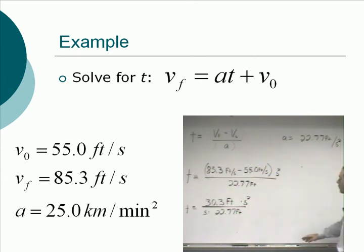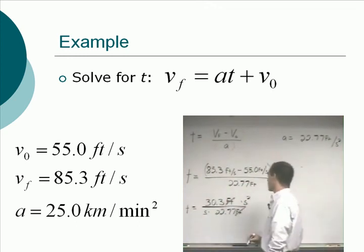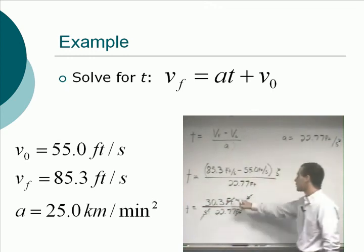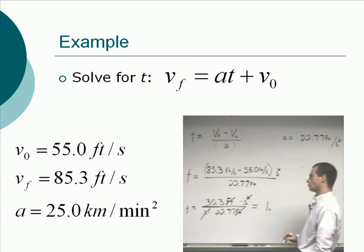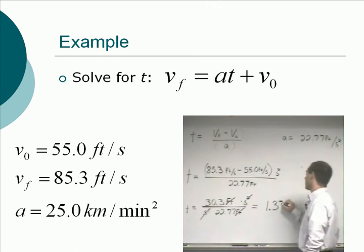Now we get unit canceling all over the place. What happens for starters? Feet are gone. One of the seconds is gone. We've got seconds squared over seconds. Those are gone. And now we can divide 30.3 by 22.77, and we get three sig digs, 1.33, and your units are seconds. T, a lowercase t, is almost invariably the abbreviation for time, and so it makes sense that we get units of seconds. Capital T is almost always temperature. Lowercase t is almost always time.